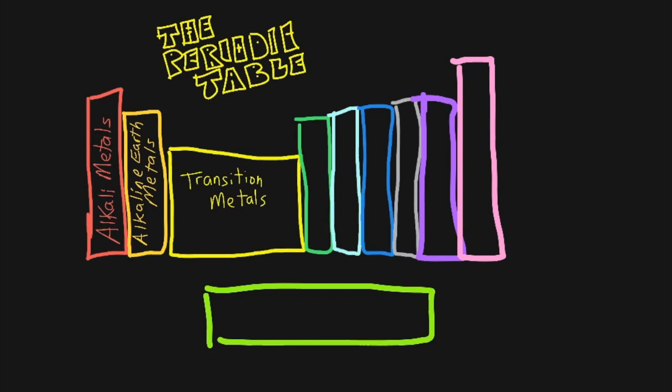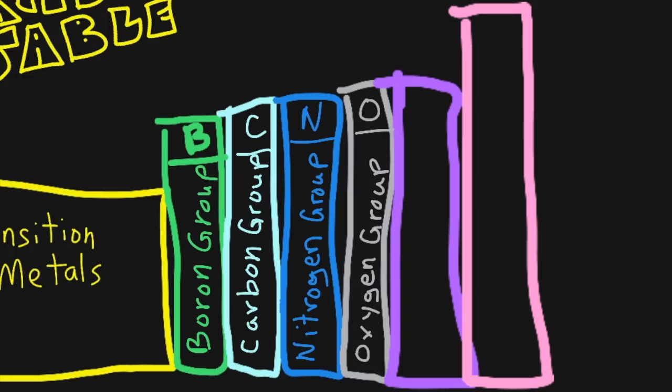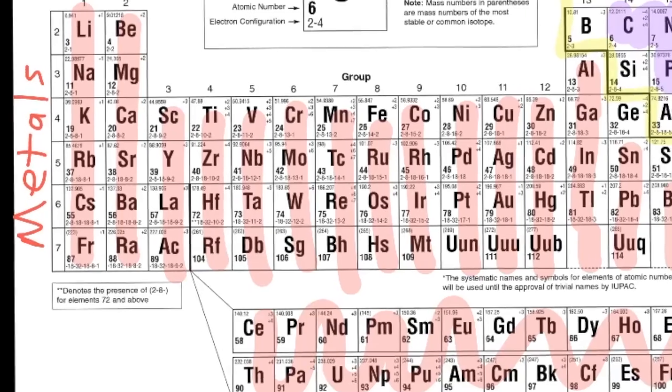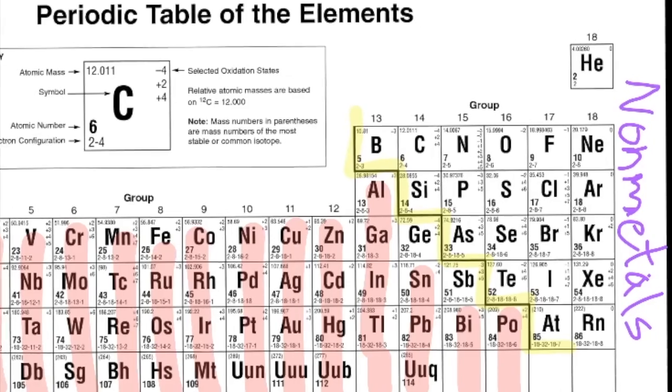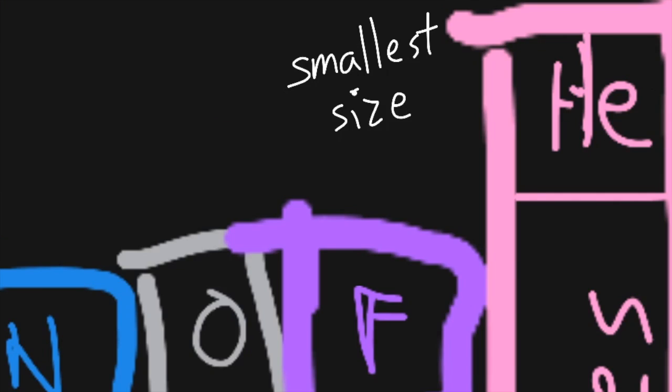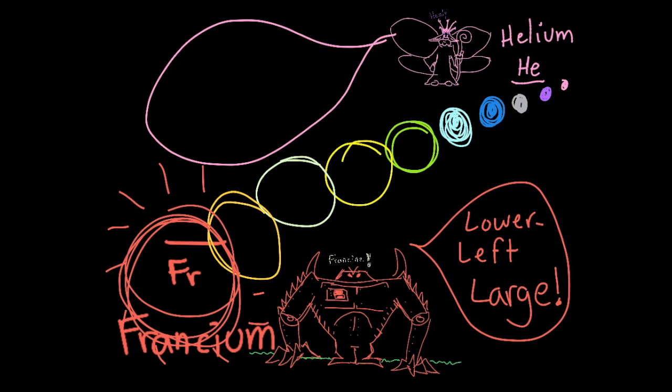To review, you should be able to name the 10 groups of elements, use the stair-step line to point out the metals, metalloids, and non-metals, and recognize a pattern in the size of the atoms called the Periodic Trend for Atomic Radius.